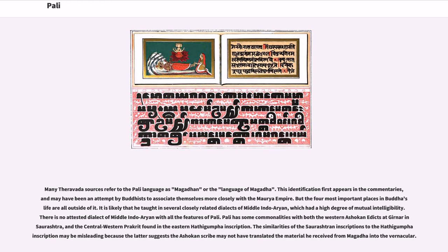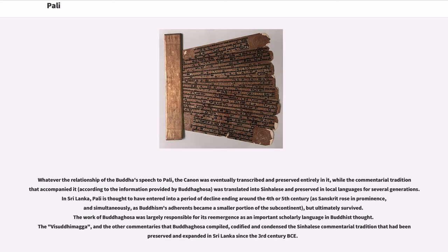Many Theravada sources refer to the Pali language as Magadan, or the language of Magada. This identification first appears in the commentaries, and may have been an attempt by Buddhists to associate themselves more closely with the Maurya Empire. But the four most important places in Buddhist life are all outside of it. It is likely that the Buddha taught in several closely related dialects of Middle Indo-Aryan with a high degree of mutual intelligibility. There is no attested dialect of Middle Indo-Aryan with all the features of Pali. The canon was eventually transcribed and preserved entirely in it, while the commentarial tradition was translated into Sinhalese and preserved in local languages for several generations.